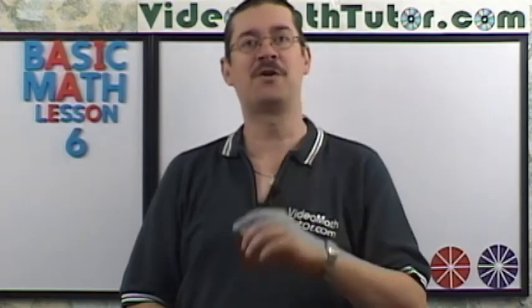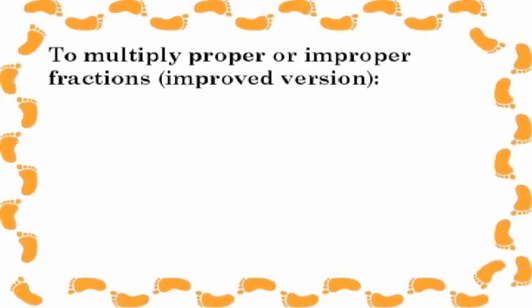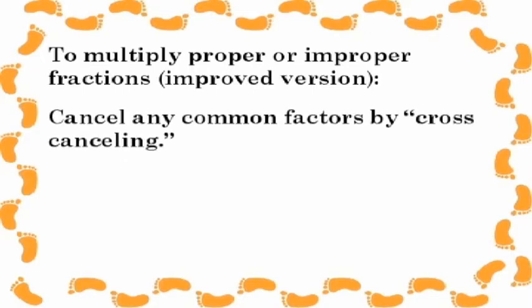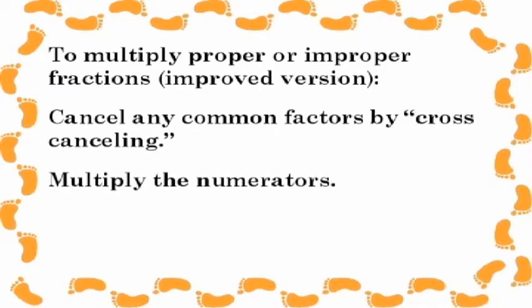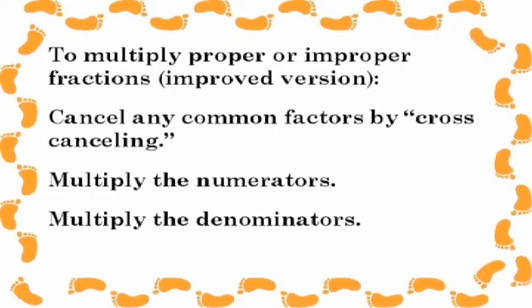So now we have an improved version of multiplication. To multiply proper or improper fractions, improved version. Cancel any common factors by cross-canceling. Multiply the numerators. Multiply the denominators. Simplify if possible.